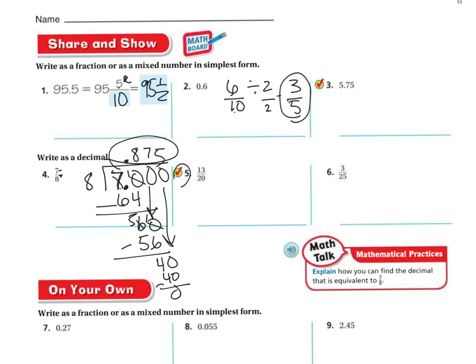So if you have the fraction, you're going to divide. If you have the decimal, just know its place value. So this is 5 and 7500ths, so it's going to be 5 wholes and 7500ths, and then you just need to reduce. All right, you may work with a partner or myself. Good luck.